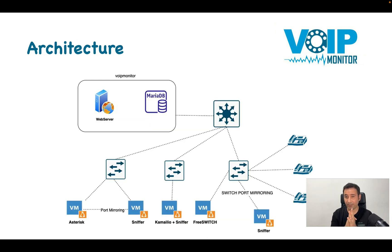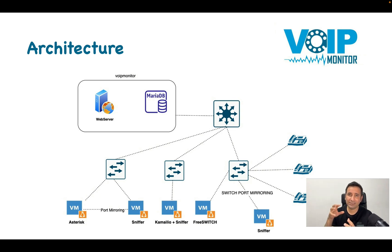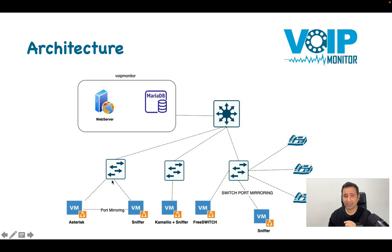Let's talk about VoIP Monitor architecture. We have a web server where the commercial web UI runs — which requires a paid license. We have a database using MariaDB, though you can use MySQL or any MySQL-compatible database, commercial or open source. We have sniffers with three deployment modes. The basic one is installing the sniffer directly on the PBX or SIP SBC itself. For example, if I have Kamailio as my SIP router, I can install the sniffer on the same Linux machine. This is the easiest way, though it shares CPU cycles with your PBX or SIP router and may cause issues under high load.